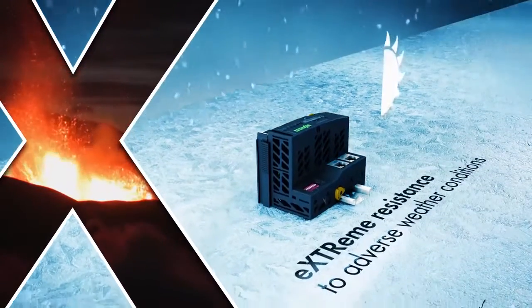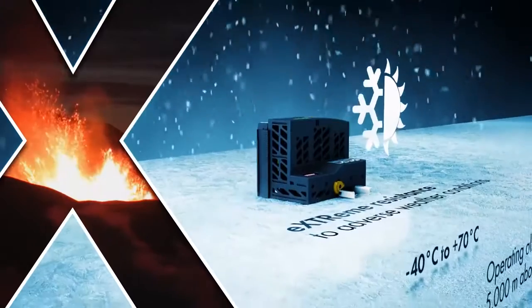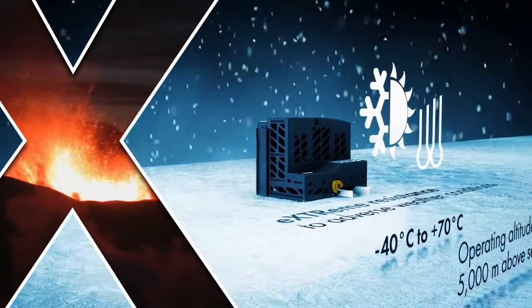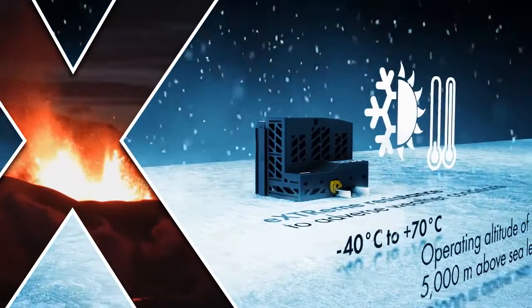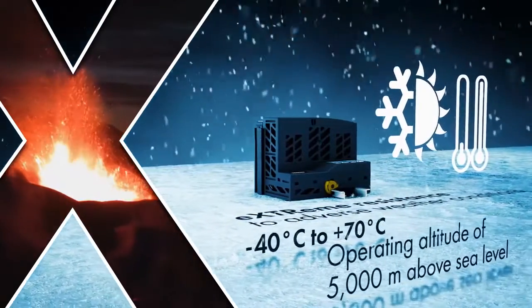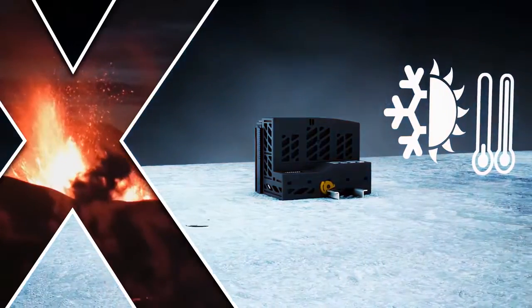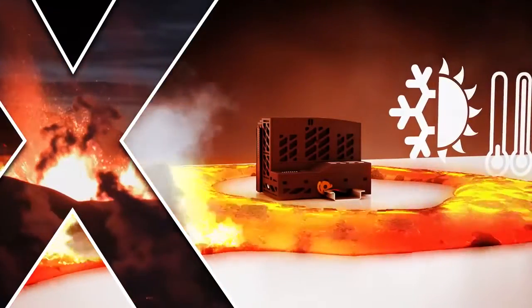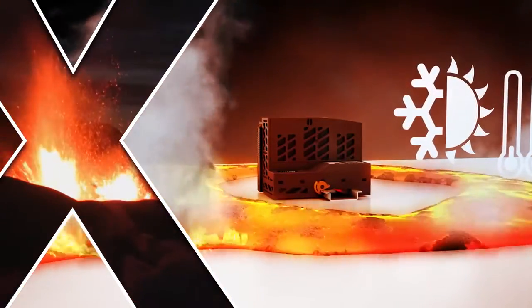The XTR variant of the WAGO I.O. System 750 remains unaffected by both freezing cold down to minus 40 degrees Celsius and scorching heat up to 70 degrees Celsius, for instance in wind power systems or secondary substations. This applies equally for both startup and ongoing operation. Additional heating or cooling equipment is not necessary.